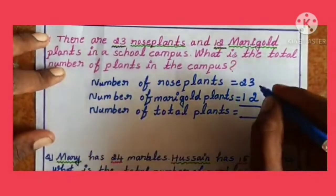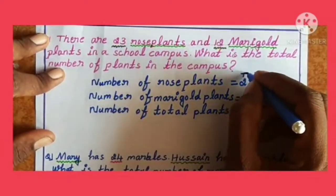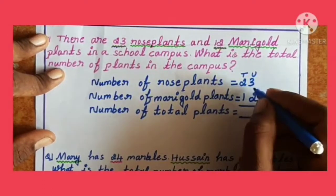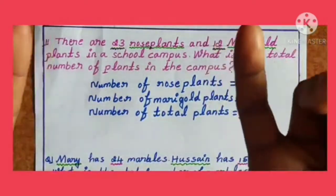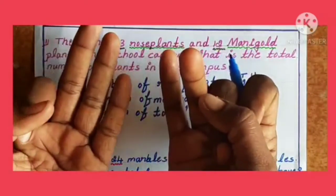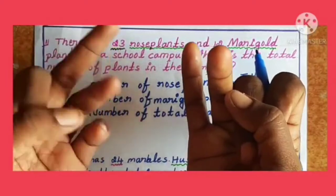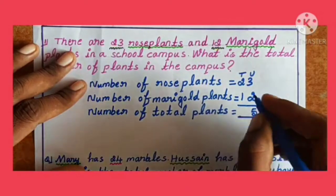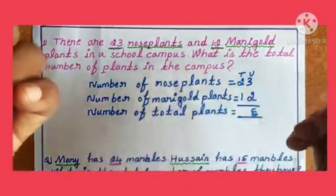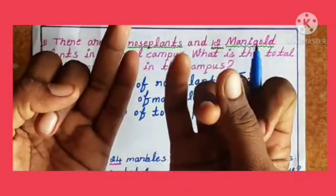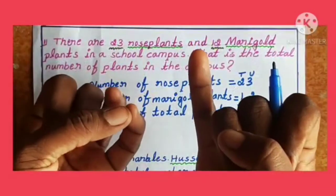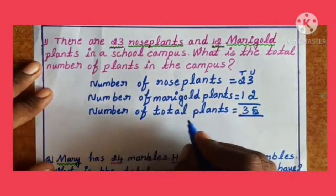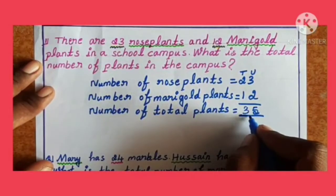23 plus 12. First, add units — write tens and units. Add units: 3 plus 2. Count now: 1, 2, 3, 4, 5. Next, 2 plus 1. Count: 1, 2, 3. So 2 plus 1 is 3. Number of total plants is 35.